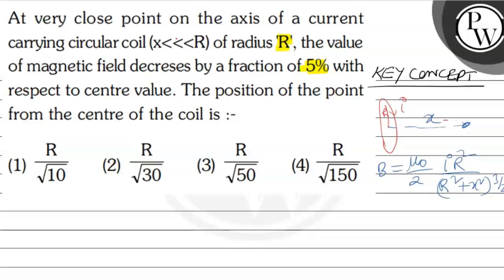This is the formula. If x equals zero, this gives the field at the center. This is the formula for the general point.